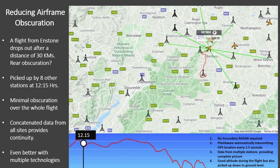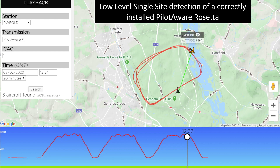It is also worthy of note that the signal is picked up right down to ground level as the aircraft does a couple of circuits at the end of the flight. But do you always need multiple stations to eliminate airframe obscuration? The answer is no. To eliminate airframe obscuration, you need correctly designed and correctly installed electronic conspicuity equipment. Here is an example of a single station picking up EC signals from a correctly installed PilotAware unit in a Cessna training aircraft, detected doing three circuits at approximately 850 feet with no obscuration throughout.